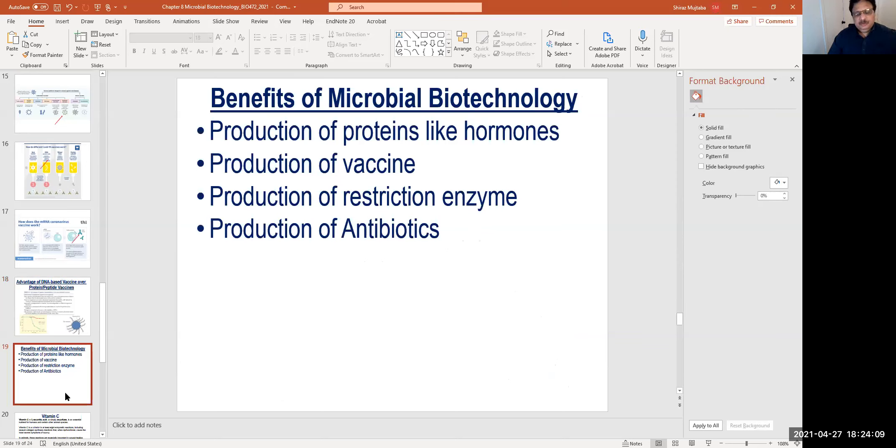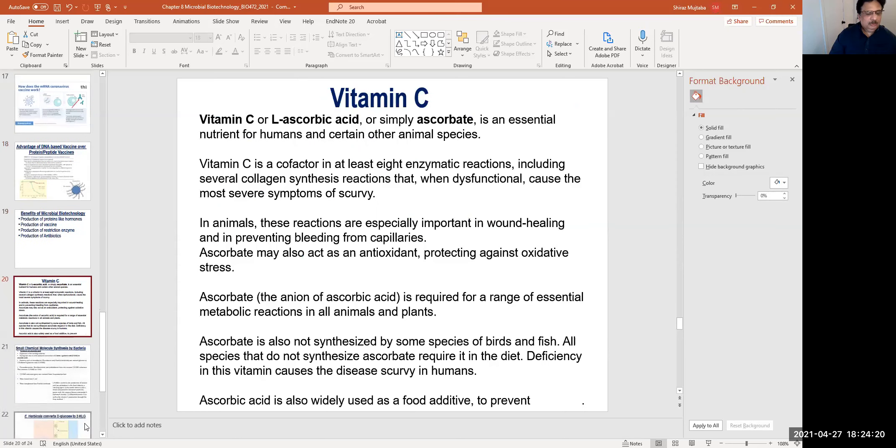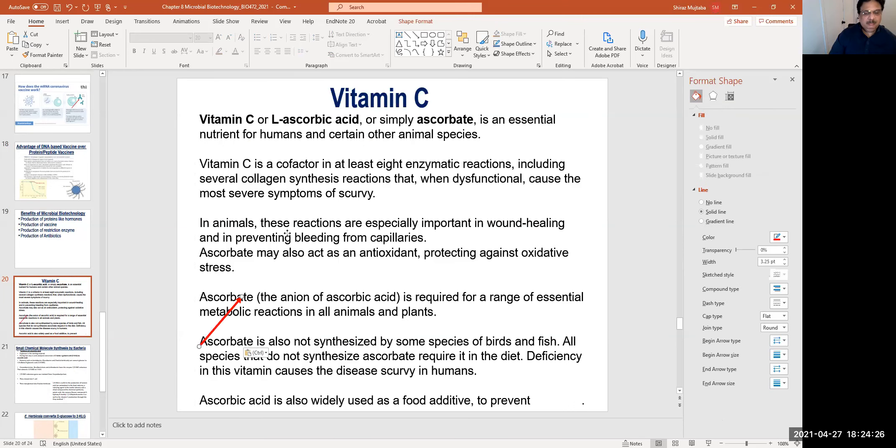So one of the benefits of microbial technology is to produce recombinant hormone, vaccines, restriction enzymes, and antibiotics. One of the unique examples that I will share with you, which is very important, is vitamin C. Vitamin C is very important for our body.